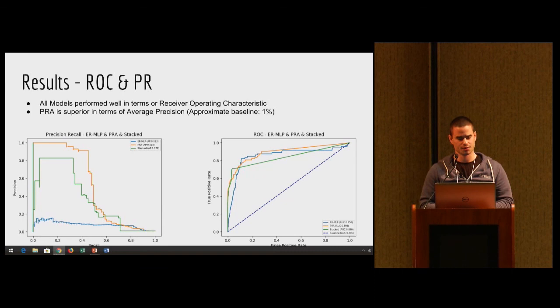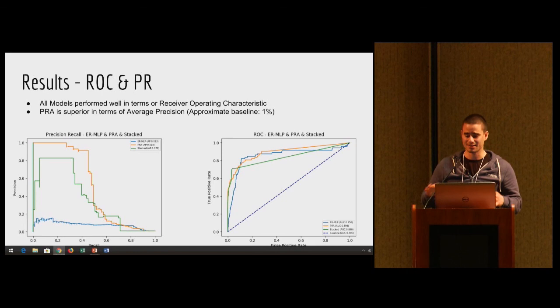In terms of results, the ROC curve for all three models performed pretty well - the stack, the ERMLP and the PRA. The PRA had the highest overall area under the curve. You want a higher area under the curve to show how well your model is able to rank the positives above the negatives. A perfect 100 percent would be a perfect score. The PRA has about 90 percent, which is pretty good.